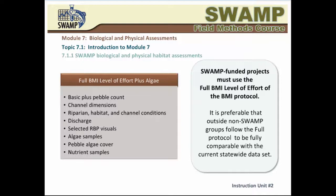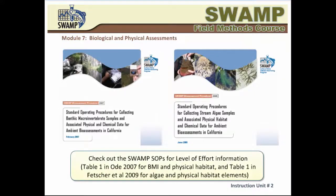The collection of algae is not a general requirement at the time this module is produced, but it may be required in a number of specific cases. If algae are collected, then the use of the algae SWAMP SOP is required for SWAMP-funded projects, and recommended for non-SWAMP-funded projects. For projects focusing on algae, many PHAB characteristics are not required. Please check the SWAMP SOPs on the SWAMP website for the latest level of effort information, and verify requirements specific to your situation.